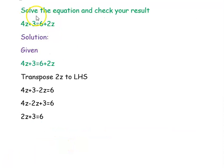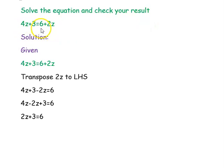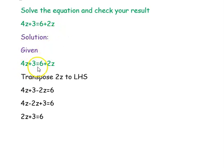Next question: solve the equation and check your result. The equation is 4z plus 3 equal to 6 plus 2z. We are writing the given question again: 4z plus 3 equal to 6 plus 2z.